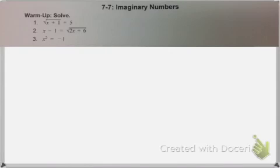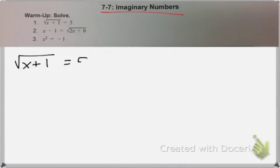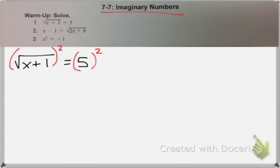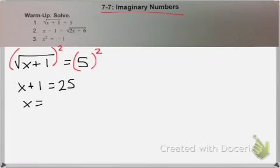Hi everybody, this is the video for 7-7, imaginary numbers. So for number 1, you have to remember when you're solving an equation with a radical, the way you undo the radical is by squaring both sides. When you finish solving, you get x equals 24.